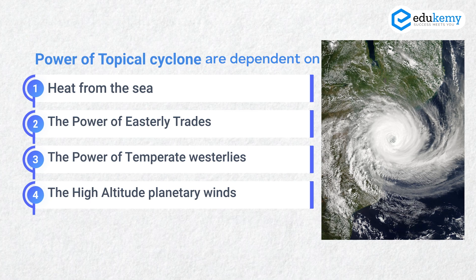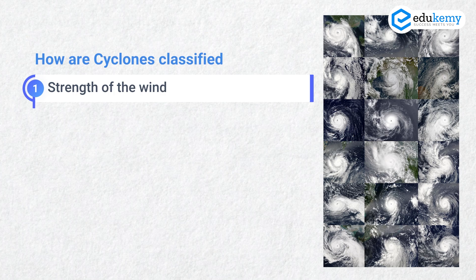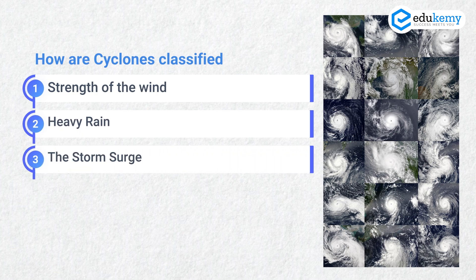There is one more related question: how are cyclones classified? Three statements — they are classified on the basis of the strength of the winds; on the basis of heavy rains; and on the basis of storm surge. All three statements are correct. Many of you might miss out the role of storm surge. The devastating power or the power of cyclones includes storm surge as part of the classification.